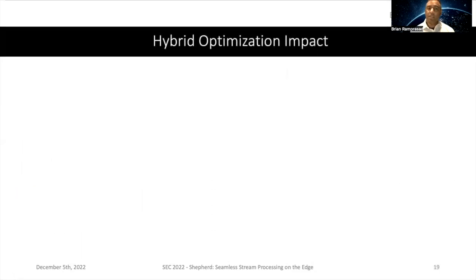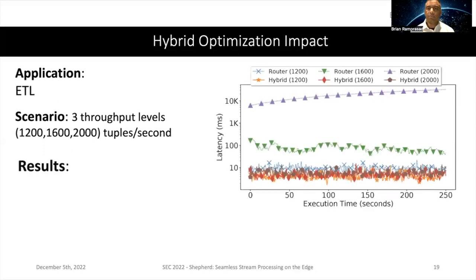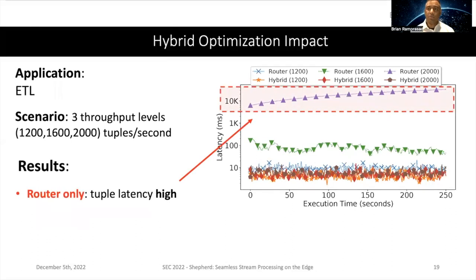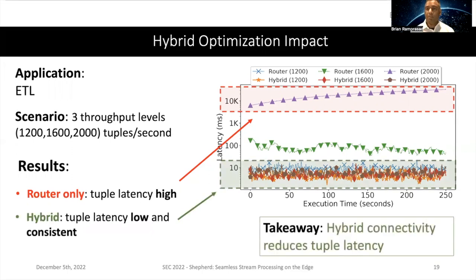Finally, let's look at the hybrid connectivity optimization impact. Using the ETL smart billing application, we examine three throughput levels: 1,200, 1,600, and 2,000 tuples per second. Using only the router for intra-data-center communication results in significantly higher tuple latency because the router is being overworked with more data than necessary. But if we bypass the router within the same data center using hybrid connectivity, tuple latency stays relatively low and consistent across all throughput levels. Hybrid connectivity can significantly reduce latency.